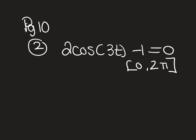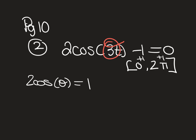The first thing to address is that the variable is 3t, not theta. Replacing it temporarily with theta: 2 cosine of theta equals 1 (adding 1 to both sides), then dividing by 2 gives cosine of theta equals one-half.